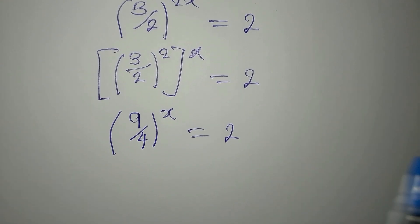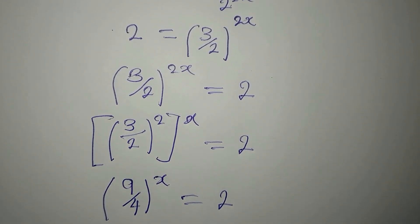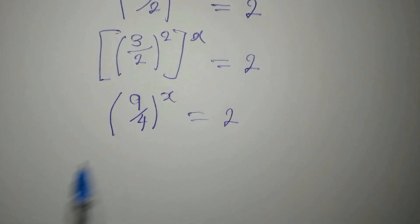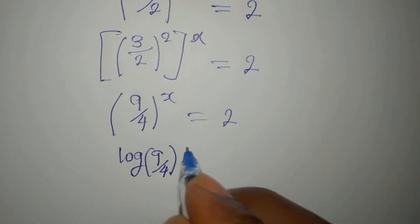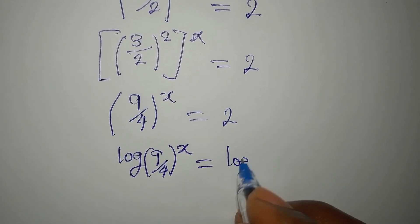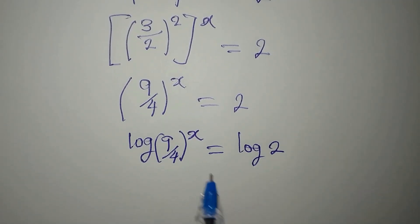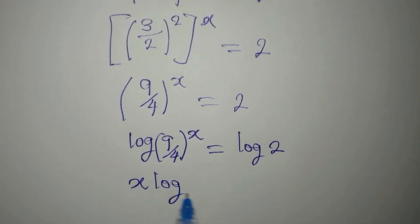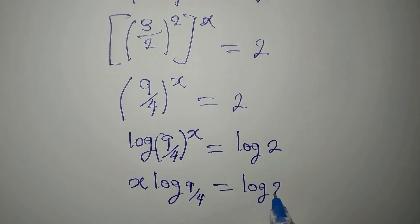Opening the bracket gives 2x as the power over there. Now take the log of both sides to get x. We will say that log of 9 over 4 to the power of x is equal to log of 2. The power always comes in front, so x times log of 9 over 4 equals log 2.